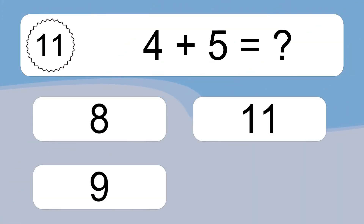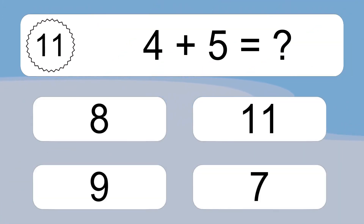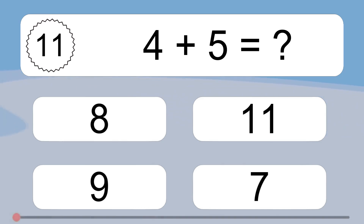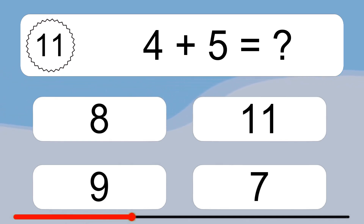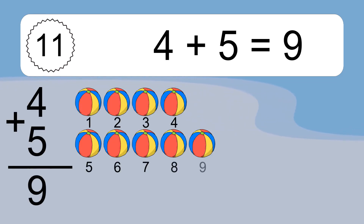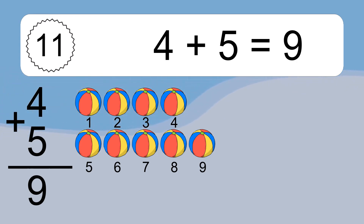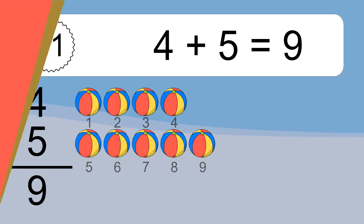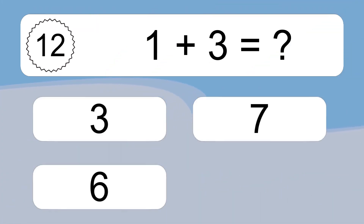4 plus 5 equals 9. Let's count it: 1, 2, 3, 4, 5, 6, 7, 8, 9.